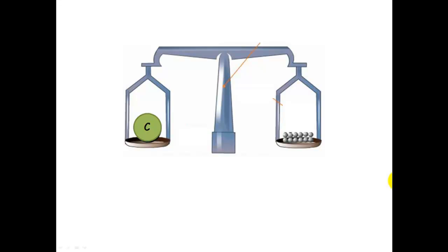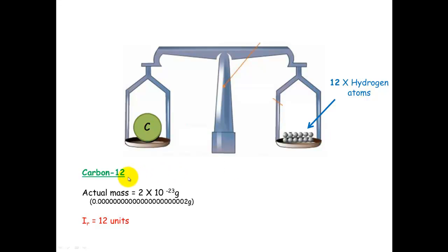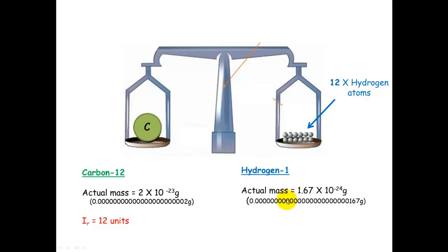Let's have a look at this diagrammatically. Here I've given you one carbon atom — carbon-12 — whose actual mass is 2×10⁻²³ grams, but instead we've said it has a relative isotopic mass of 12 units. These are hydrogen atoms. To find the equivalent weight to one carbon atom, we need 12 hydrogen atoms to have the exact same weight. So we can work out the mass of hydrogen relative to carbon-12: it equals 1/12, because 12 hydrogens are equivalent to one carbon. So hydrogen has a relative isotopic mass of 1 unit.